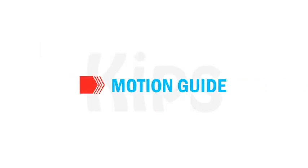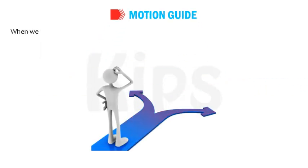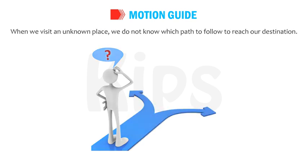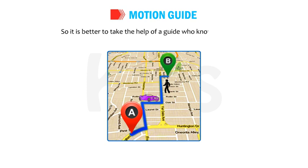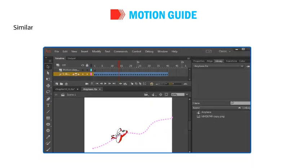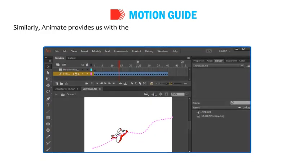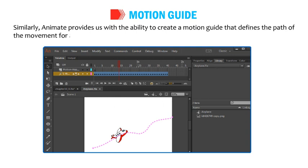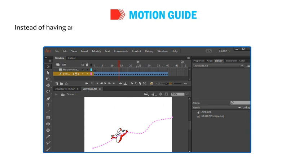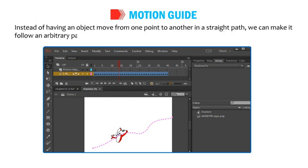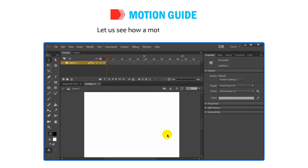Now we will discuss the Motion Guide. When we visit an unknown place, we do not know which path to follow to reach our destination, so it is better to take the help of a guide. Similarly, Animate provides us with the ability to create a Motion Guide that defines the path of movement for an object. Instead of having an object move from one point to another in a straight path, we can make it follow an arbitrary path that we draw — a Motion Guide.